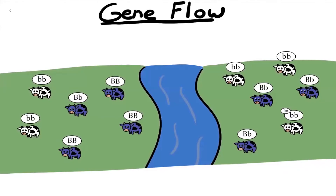Let's take this simple example of two different populations of cows on each side of a river. The cows can't cross the river and they can't mate with each other, meaning they're totally different populations.